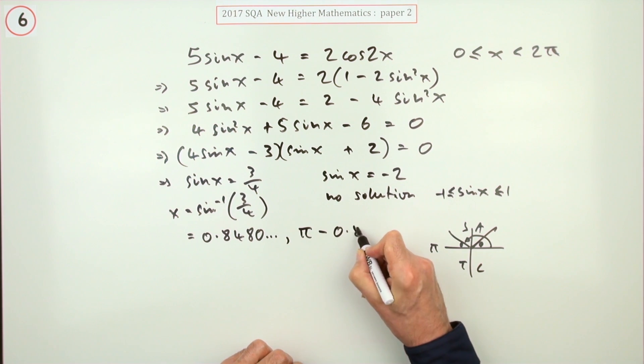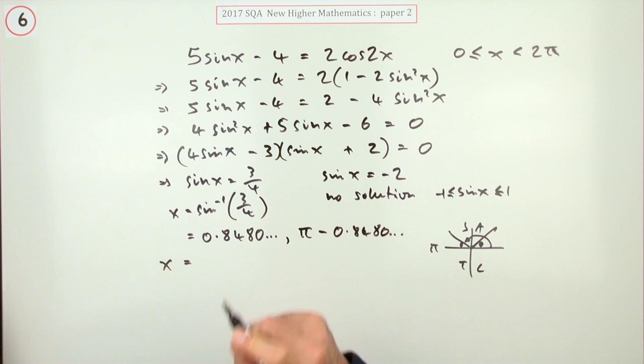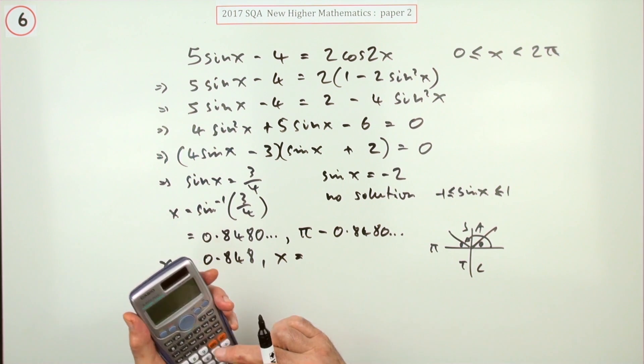So I'll only have my two answers. So the first one, obviously rounded off, is 0.848. The second one is going to be—I've already got that in the calculator, so I'll just do minus pi and forget the negative.